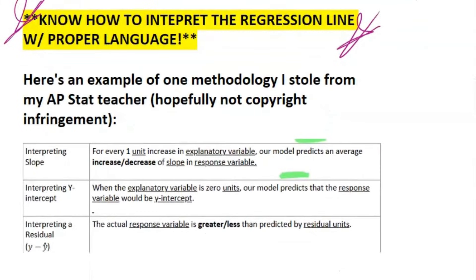Alright, so here's an example. I just stole this methodology off my AP stat teacher, so hopefully it's not copyright infringement. But it basically shows you one way you could use language to interpret the slope, interpret the y intercept, interpret the residuals, all that. Talking about stuff like explanatory variable - that's just the independent variable, your response variable - your dependent variable. And then using that specific and really correct language.